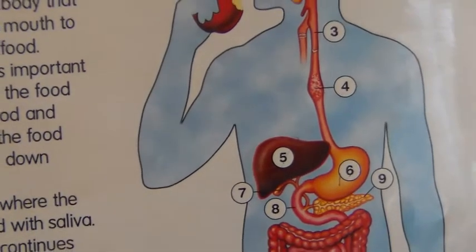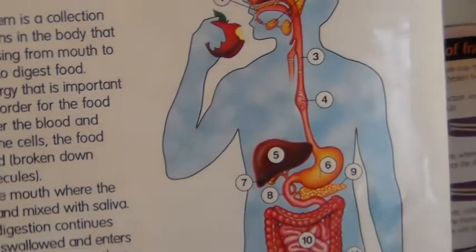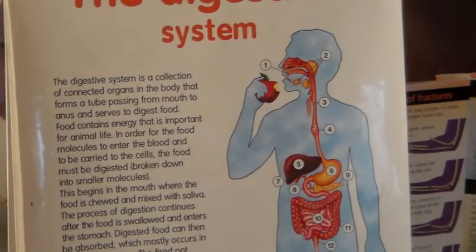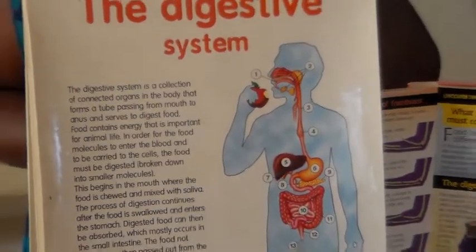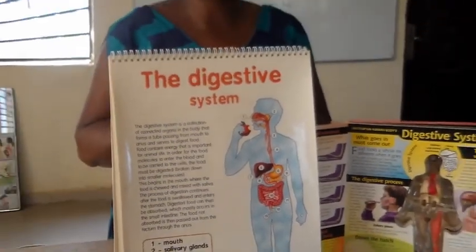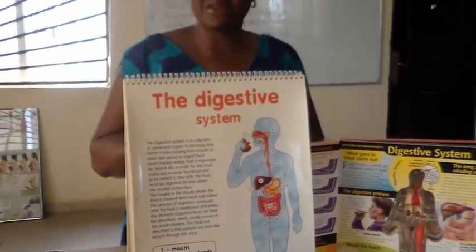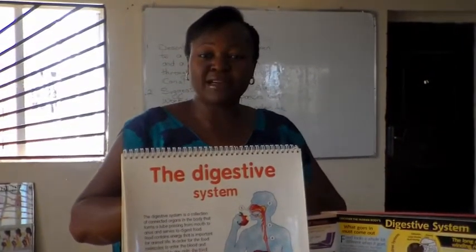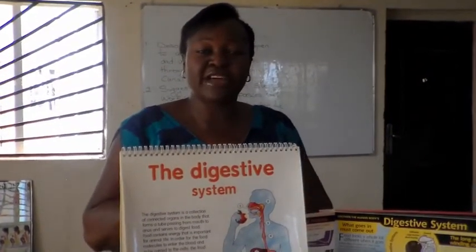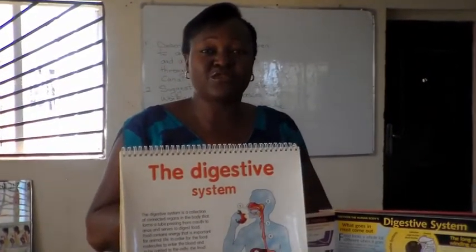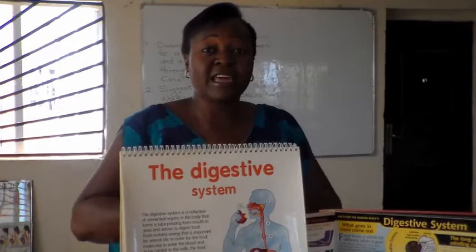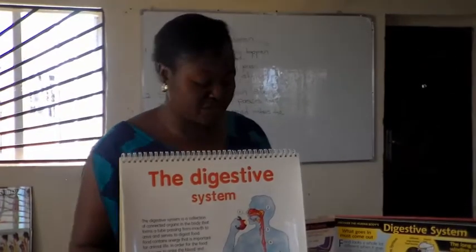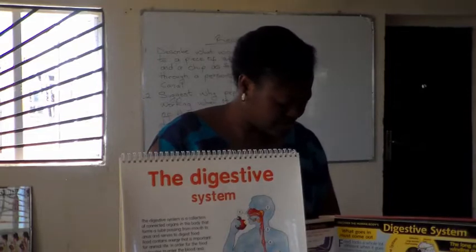Without the sphincter muscle, the food that comes from the oesophagus cannot go into the stomach. And after digestion in the stomach, without the sphincter muscle, it's difficult for the stomach to allow the movement of already digested food from the stomach into the small intestine. So that's what the sphincter muscle is and what it does.